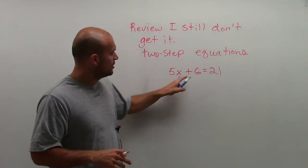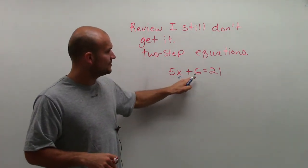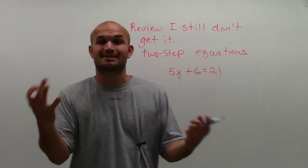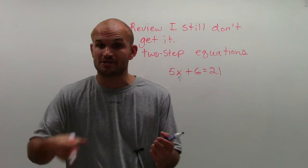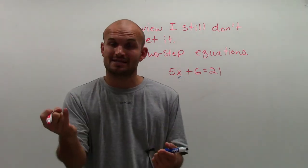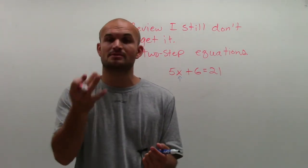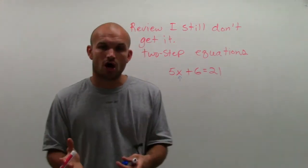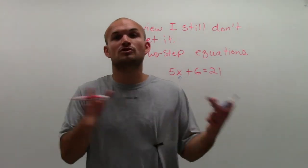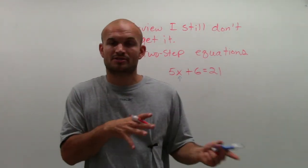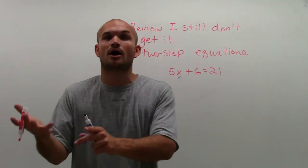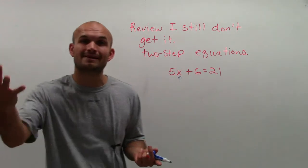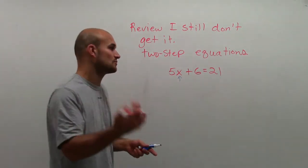If you look at this, the order of operations says: do what's inside parentheses first, then exponents, then multiply and divide, then add and subtract. When you're solving, we do the reverse order of operations — starting from the bottom. So we're going to look for addition and subtraction first, and those are the inverse operations we do first.